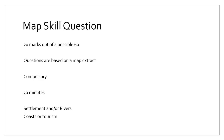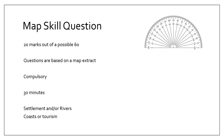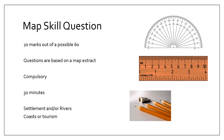This particular part of the exam paper is worth 20 marks out of a possible 60. All of the questions are based on a map extract. It's compulsory and you should aim to spend about 30 minutes completing it. Although the questions tend to focus more on settlement or a mixture of rivers, they can bring in other aspects of the course such as identifying features along a coastline or tourism services. You must have the following equipment: protractor, ruler, pen, pencils, sharpener, and a rubber just in case.